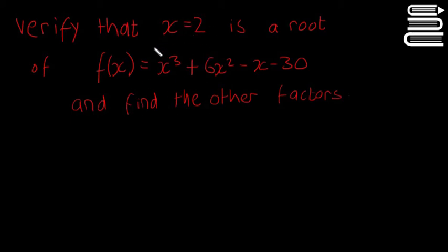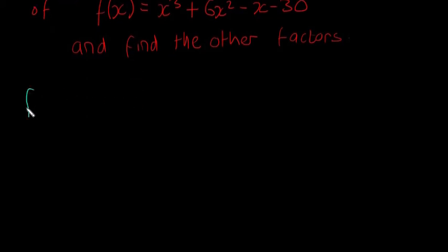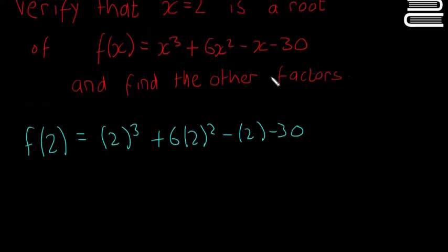So the first thing is, prove that this is a root, or verify that it's a root. So if it's a root, we know that if you write f of 2 is equal to 2 cubed plus 6 times 2 squared minus 2 minus 30. So I'm not just subbing 2 in anywhere, I'm subbing it in wherever there was an x, see that there? Wherever there was an x.